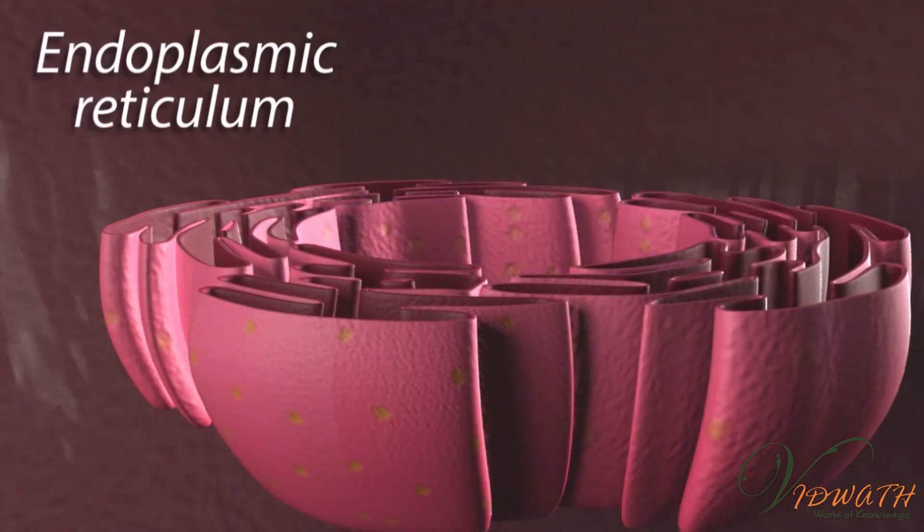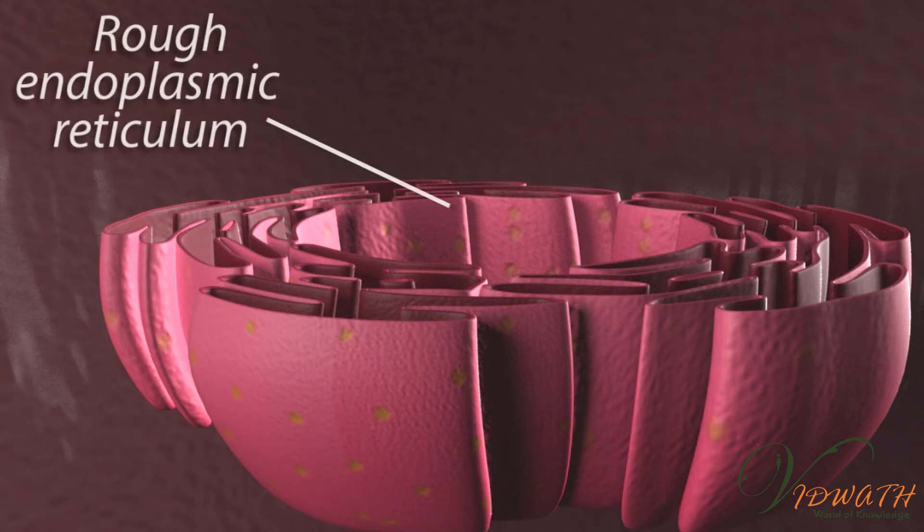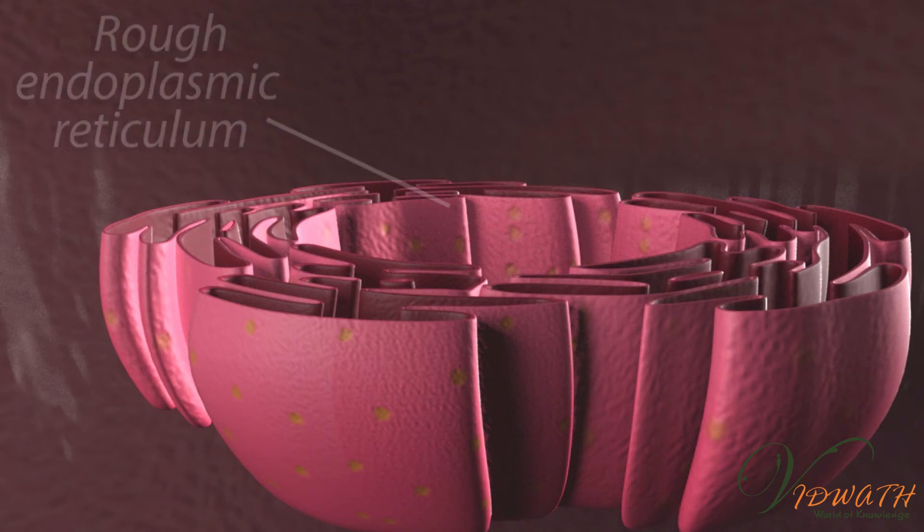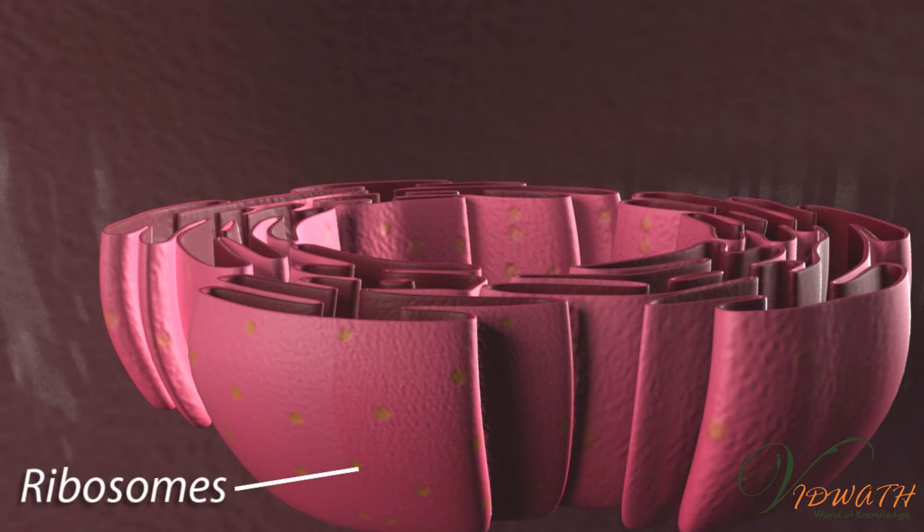Rough endoplasmic reticulum is used to store and transport material through the cell. Proteins are produced here in the ribosomes bound to the rough ER.